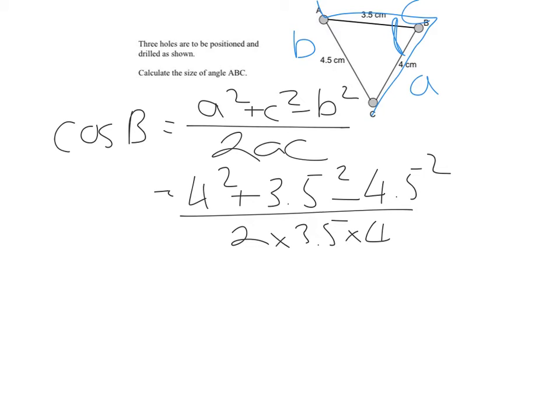When I put this in the calculator, I need to make sure that I bracket the top line and I bracket the bottom line. Otherwise, what your calculator will do will work out everything individually, and then it will just do 4.5 squared divided by 2 times 3.5 times 4 and then work out everything else. Okay, so it's really important that you do that. And when you put that in the calculator, you come out with 0.29.